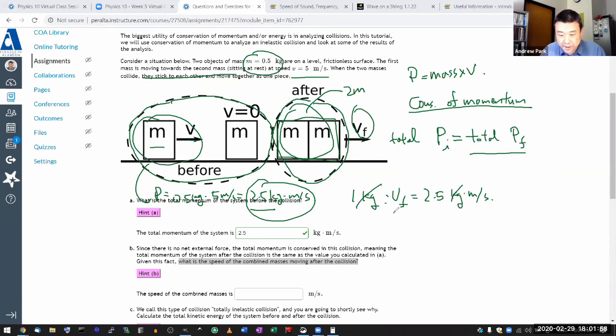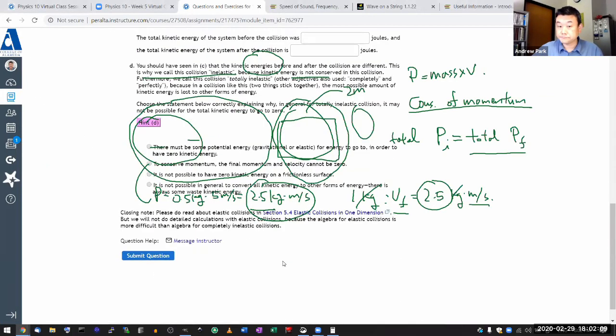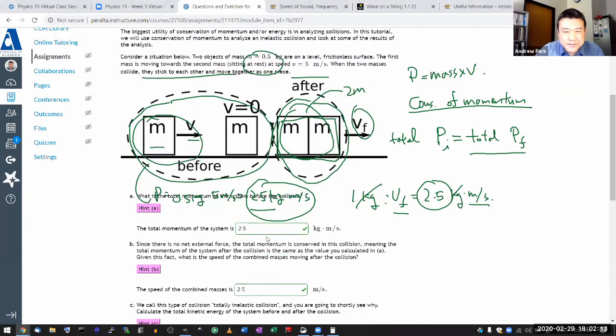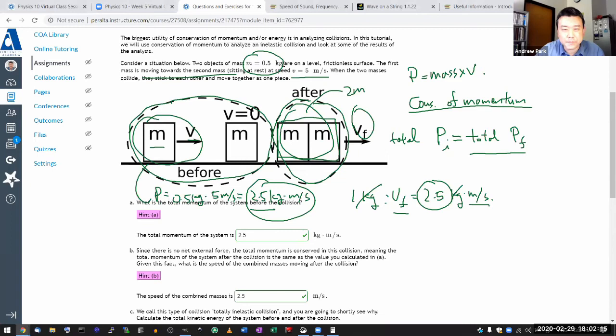So I have the final speed is 2.5 meters per second. So all right, let's answer that. Yeah, that is the speed. Yeah, I think I actually picked this 0.5 kilogram number on purpose because it makes math easier.